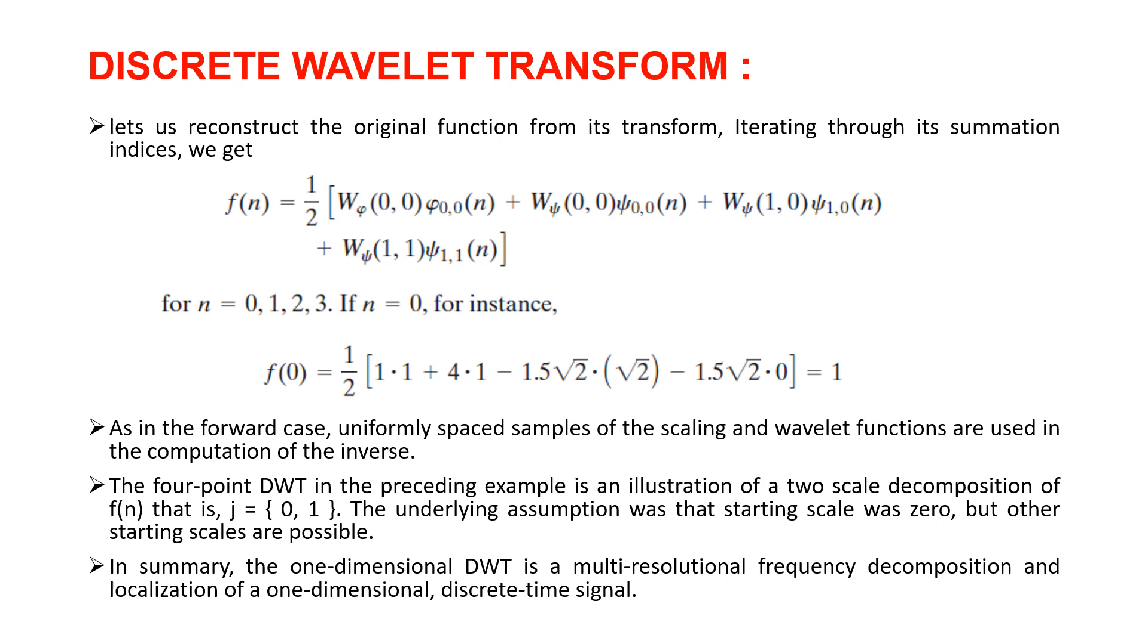The four-point discrete Wavelet transform in the preceding example is an iteration of a two-scale decomposition of f(n), that is j=0,1, where we assumed the starting scale was 0, but other starting scales are also possible.